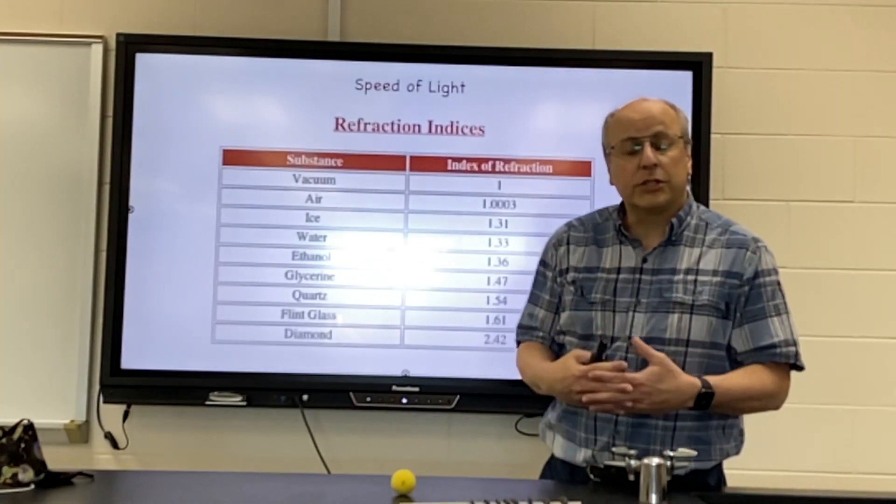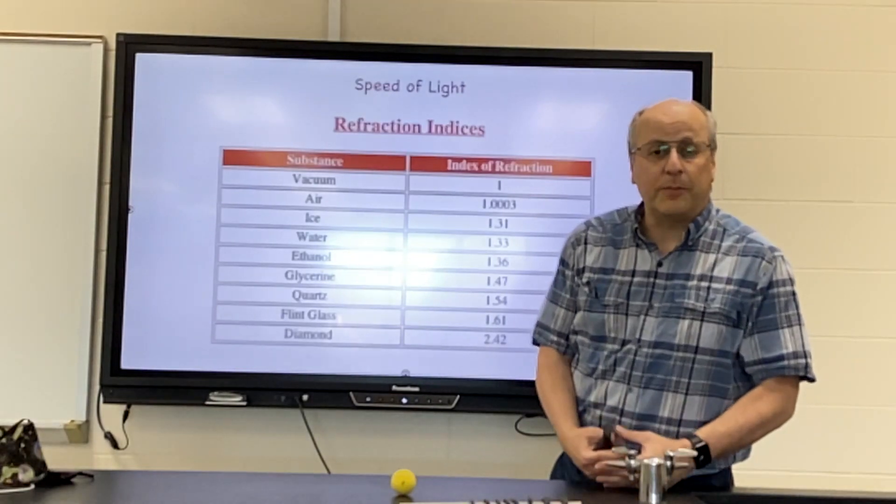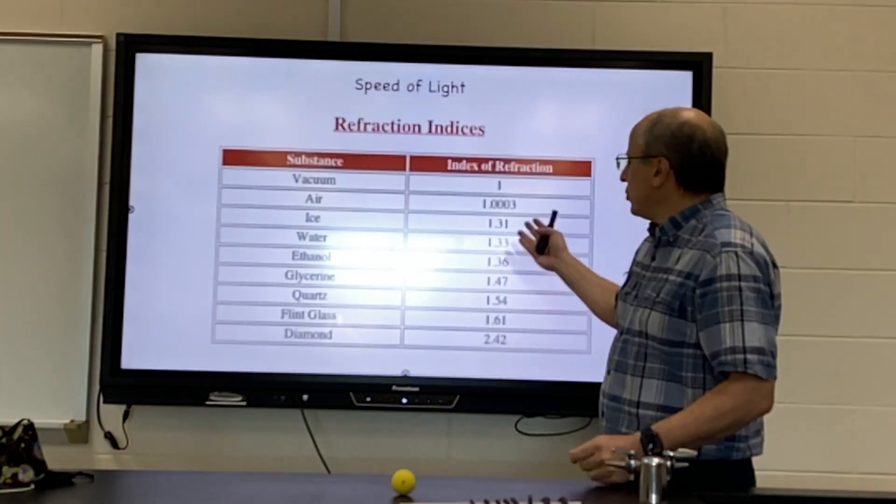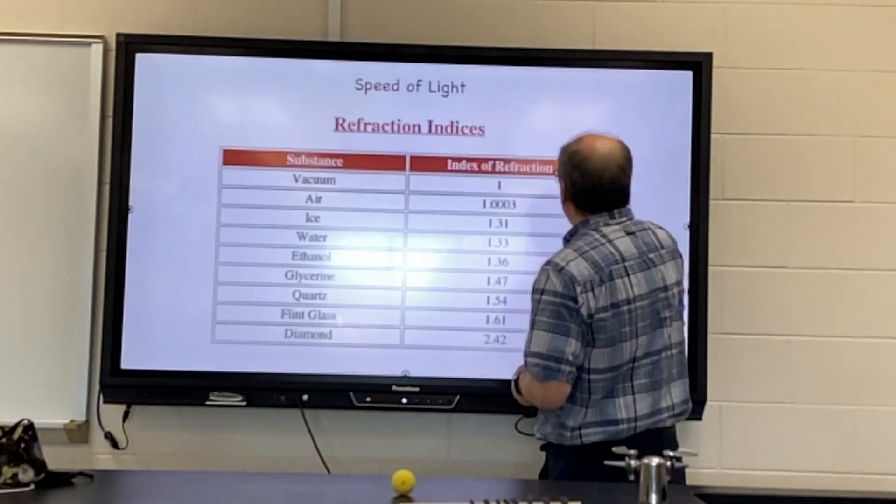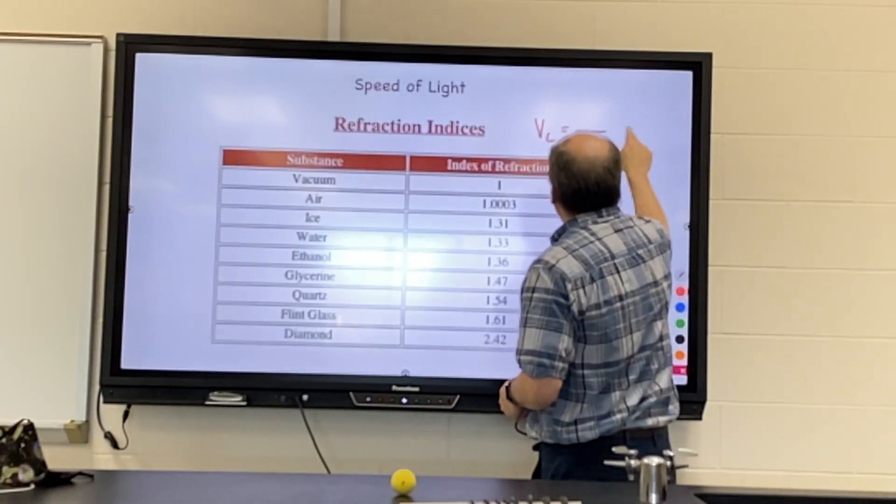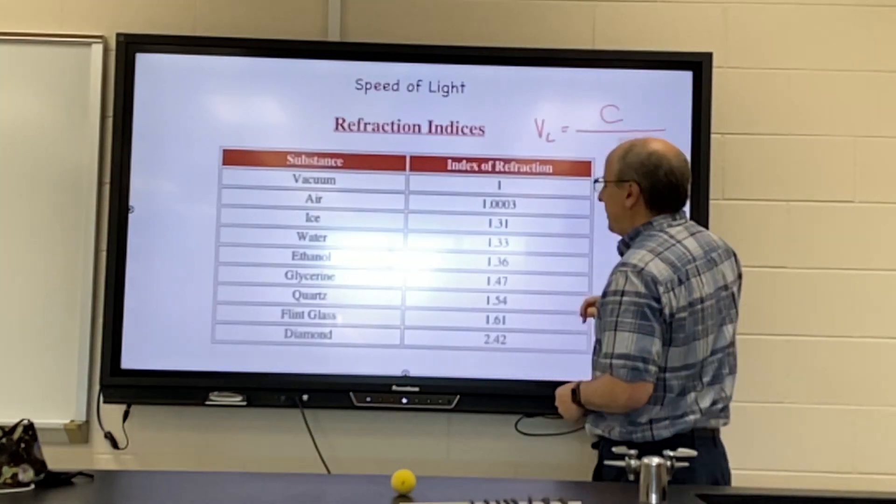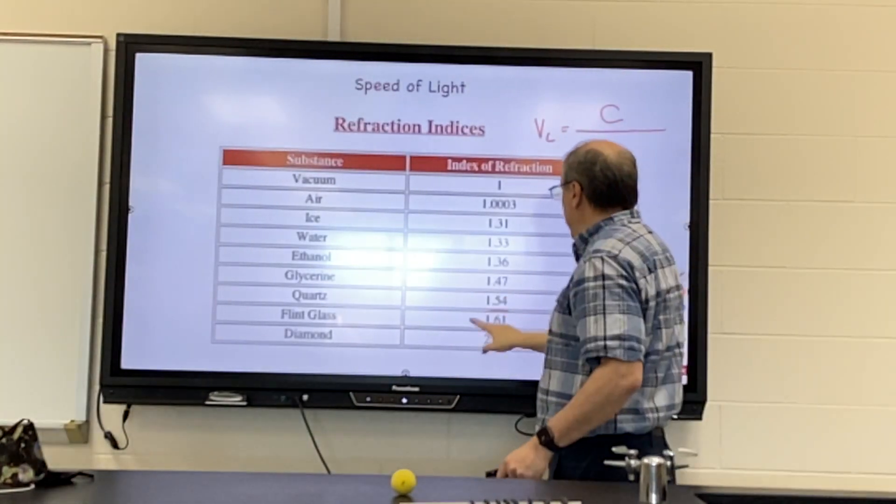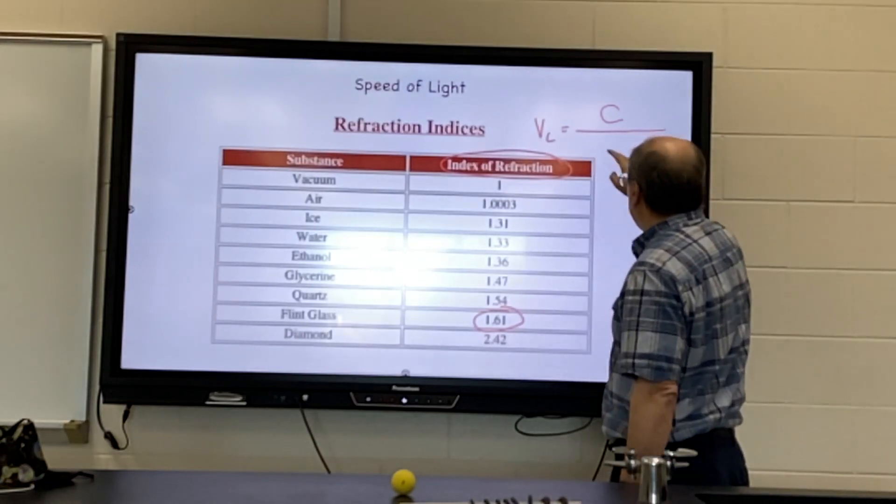And the light will slow down when it is in these other materials. So you have a chart that looks like this, and if you wanted to find the speed of light through glass, you take the speed of light in outer space and you divide by this number. It's called the index of refraction.